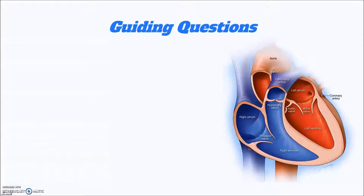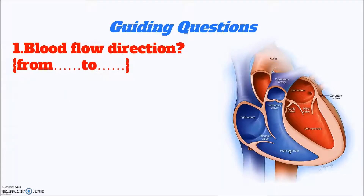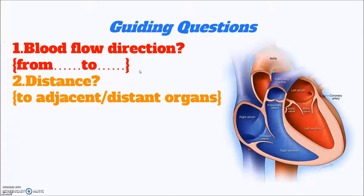We have four guiding questions to help us state and explain the muscle thickness of the atria and ventricles. The first question is: what is the blood flow direction? When we talk about direction, we need to say from where to where. The second question is: how far does the blood travel? To adjacent organs or to distant organs — to the brain, to the liver, to the lungs, to the toes, to the fingertips. We need to know the distance the blood is traveling.